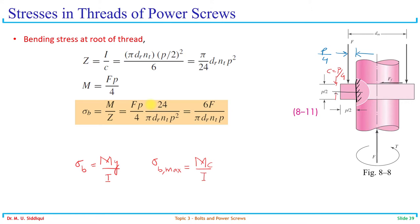Let's talk about bending stresses. The book has provided the entire derivation. The approach is slightly different — we usually deal with the relationship σ = Mc/I whenever we need to calculate bending stresses in any beam. We need to know the moment, the height y from the neutral axis where we need the stress, and the second moment of area I. We can use this formula and derive the relationship ourselves.